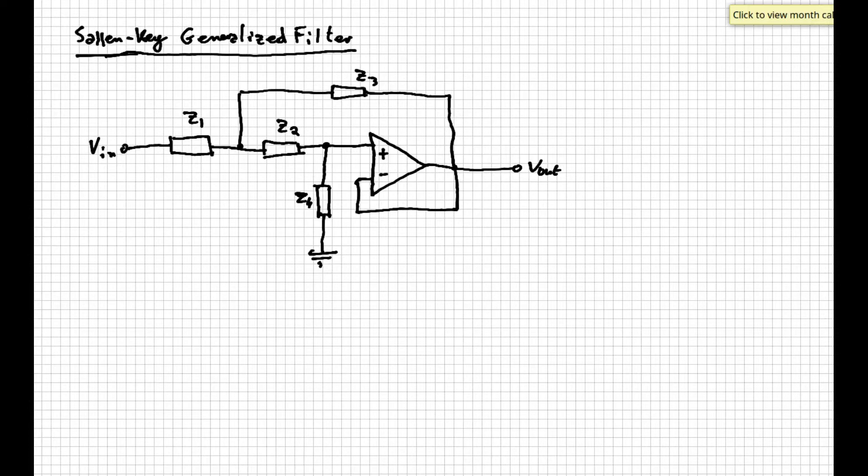We will see that depending on the impedances used in the circuit, we can make this circuit work mainly as a low-pass filter or a high-pass filter. The filter can also work as a band-pass filter with the appropriate choices of impedances, but for that kind of filter it is usually preferred to make slight variations to the schematic to have it work even better. But this is another story to tell, maybe in a later episode.